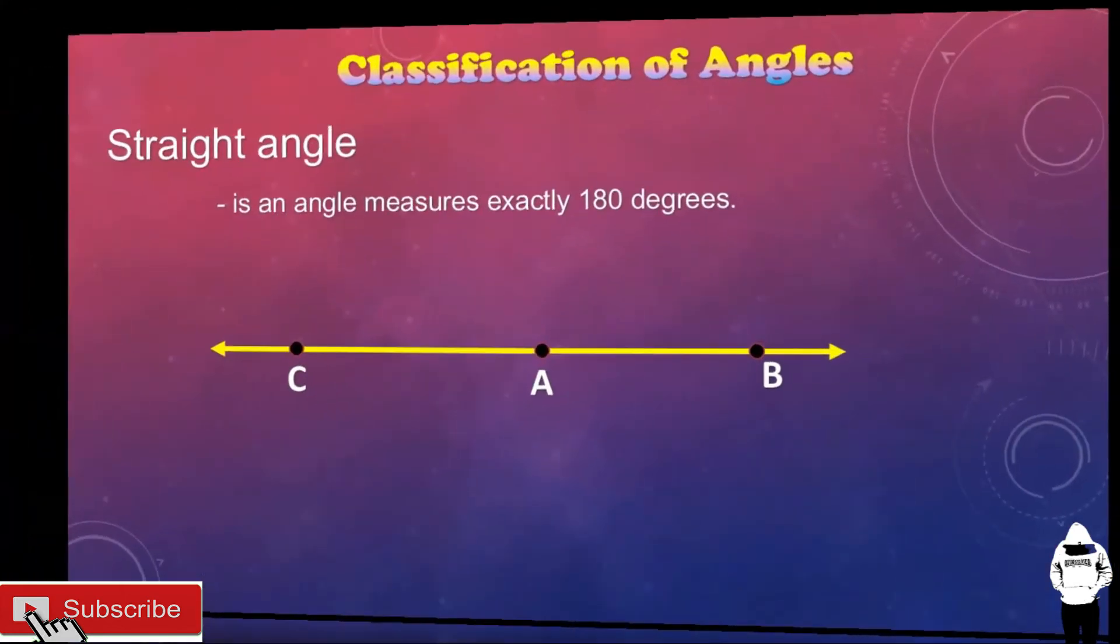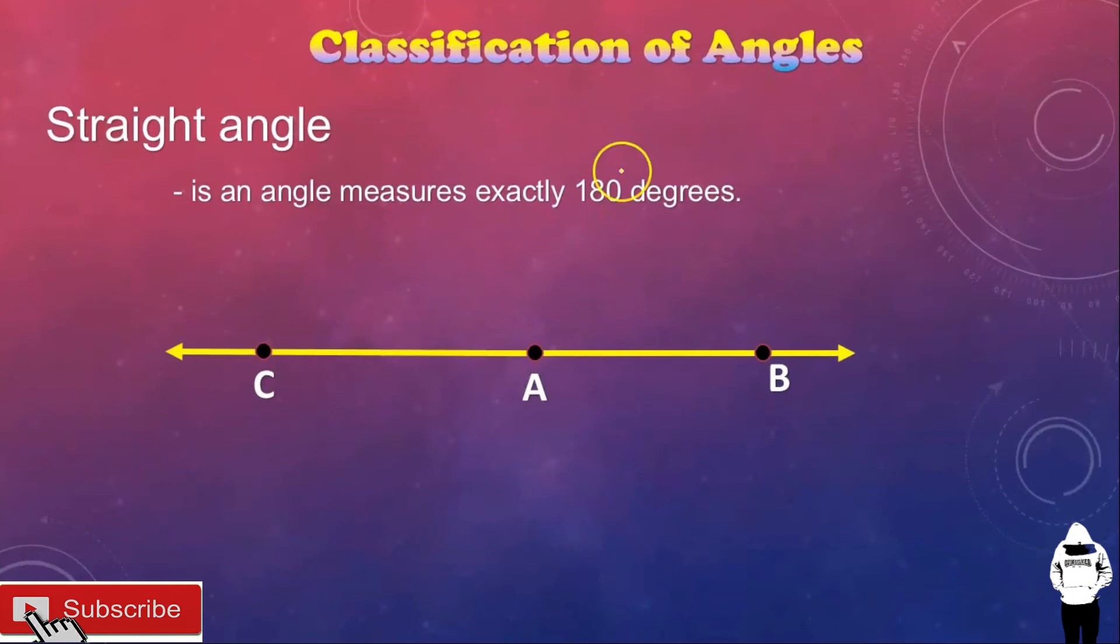Next, we have the straight angle. What is straight angle? It's an angle measures exactly 180 degrees. So, for example, this angle, angle CAB measures 180 degrees. So, yung tawag natin sa kanya ay straight angle.